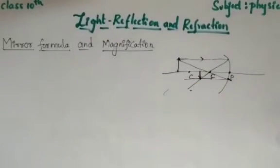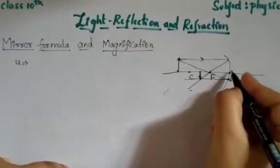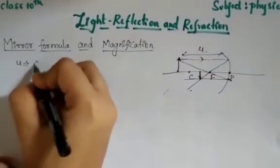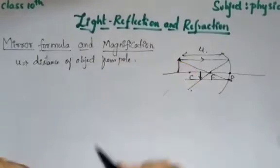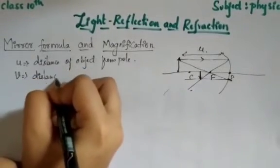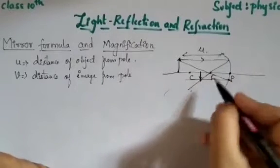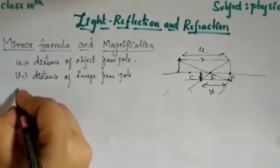The image is formed in front of the mirror, so it is a real and inverted image. Here, u is the distance of the object from the pole. The object is placed here, so this distance is called u. Similarly, v is the distance of the image from the pole. The image is forming here, so this distance from the image to the pole is v.